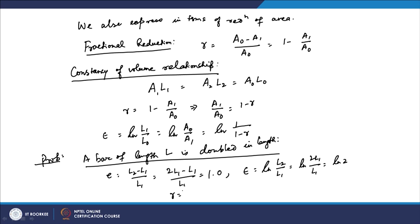Similarly, if the bar is halved in length, you can calculate these values. The engineering strain will have negative values; the true strain and fractional reduction can be computed from the compression formulas discussed. This illustrates how these terminologies are applied in various metalworking scenarios.